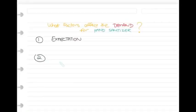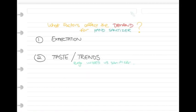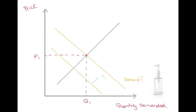What's another factor that we can think of? How about taste or trends? If the government said that wipes were more efficient than sanitizers, what would happen to the demand for sanitizers? They would decrease, which would see our demand line shifting to the left, showing a fall in price and quantity demanded.